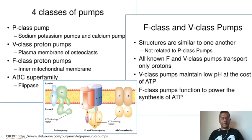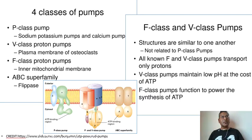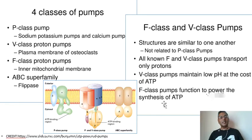The P, F, and V classes only transport ions, while the ABC class only transports small molecules. The sodium-potassium pump is one of the large class of P-type ATPases, so called because they all incorporate a phosphate-linked intermediate in their mechanism. F-class and V-class pumps are structurally similar to one another but not related to P-class pumps. All known F and V-class pumps transport only protons. V-class pumps maintain low pH at the cost of ATP, whereas F-class pumps function in the synthesis of ATP. I shall discuss F-class proton pumps and P-class pumps for our syllabus today.